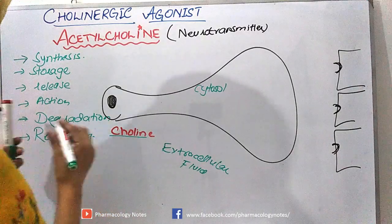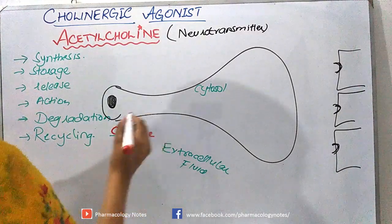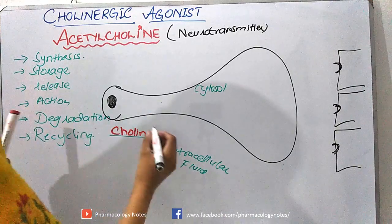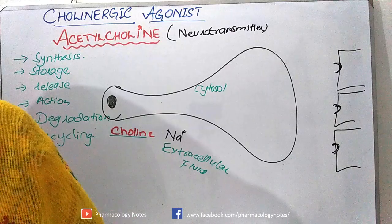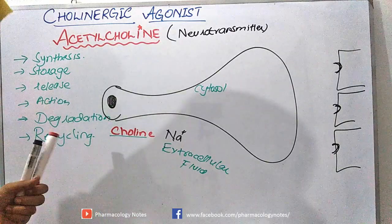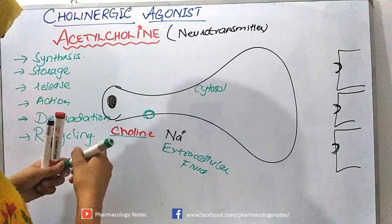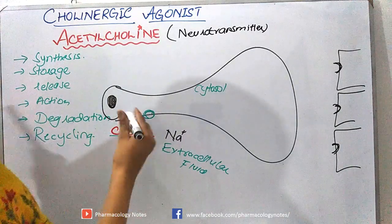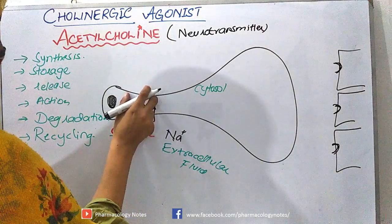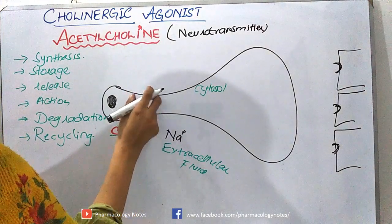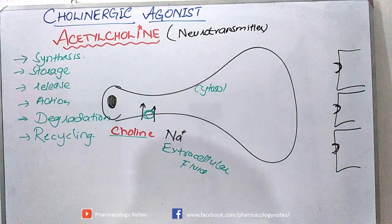Choline has a quaternary nitrogen, so it needs an active charge-mediated mechanism to be transported — and that involves sodium. This sodium will be transported via a special co-transporter, which transports both choline and sodium from extracellular fluid into the cytosol.